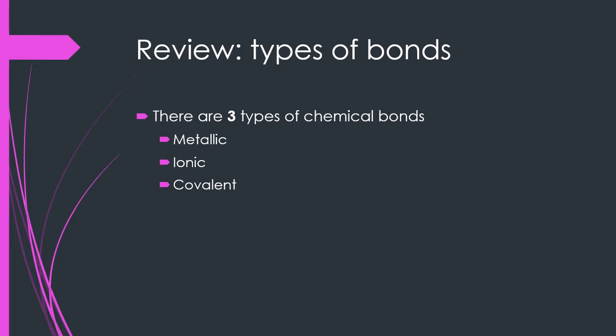Metallic bonds generally exist between two metal atoms, where there is very similar electronegativity, and so the electrons are generally very free to roam about the structure.